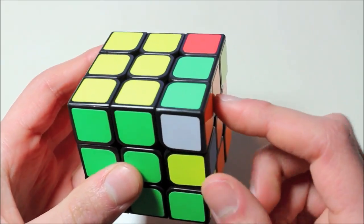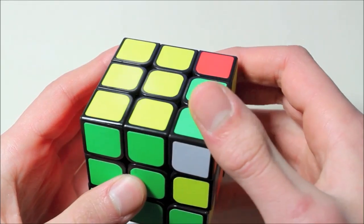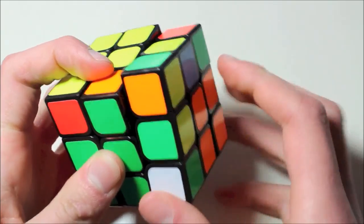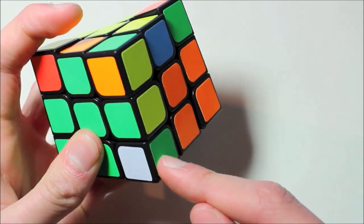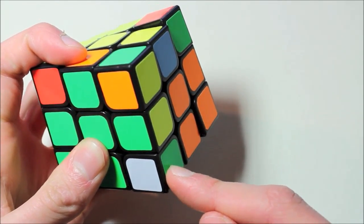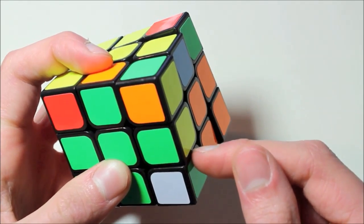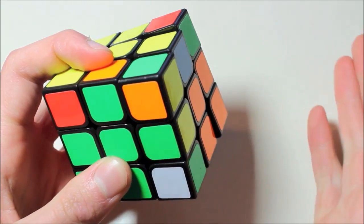Here's another example from the same last layer. Doing the inverse of a sledgehammer, which is F R prime F prime R, you can see that we get this case. Again, take note of the position and orientation of these pieces, as well as the fact that we need to do a sledgehammer to pair them up. However, it's not very obvious that doing a sledgehammer actually pairs these pieces up, but of course it does.